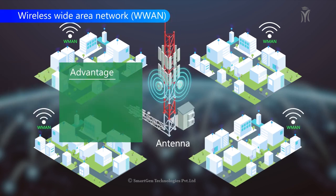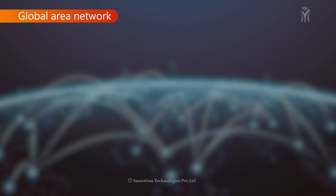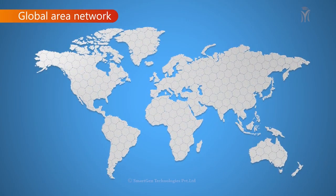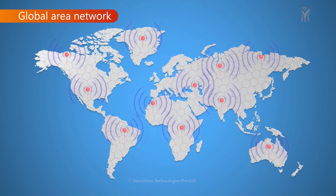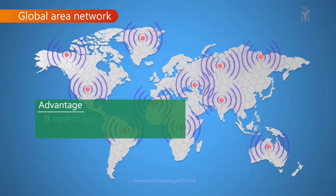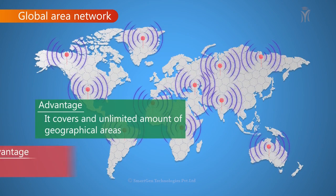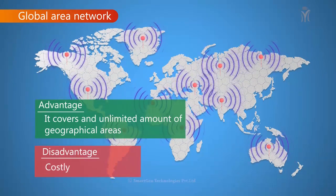Global Area Network (GAN) refers to a network composed of different interconnected networks that cover an unlimited geographical area. Advantages: it covers an unlimited amount of geographical area. Disadvantages: it is costly.